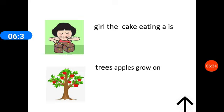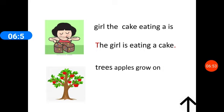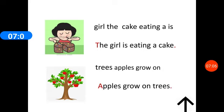Now do these groups of words make any sense? Girl the cake eating a is. Trees apples grow on. Oh no, we do not understand. Let us correct them and write. Yes, the girl is eating a cake. The sentence begins with a capital letter and ends with a full stop. Apples grow on trees. This is a correct sentence.